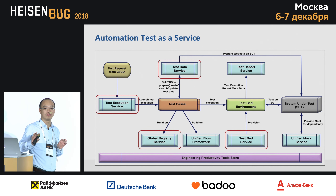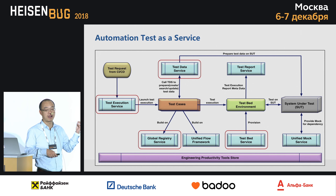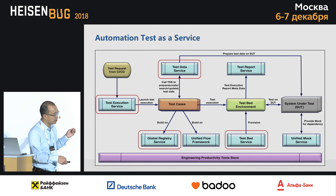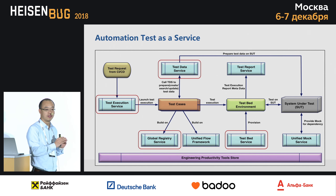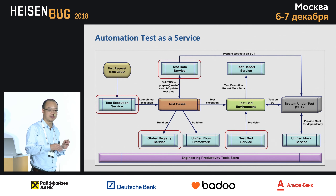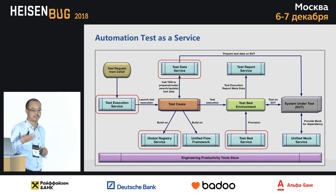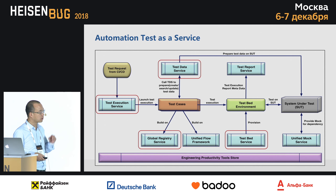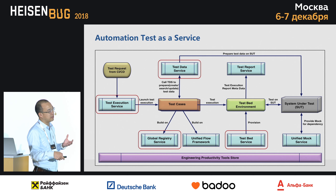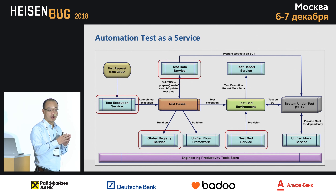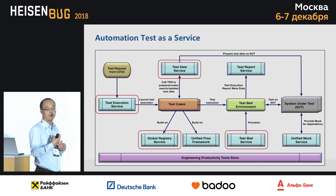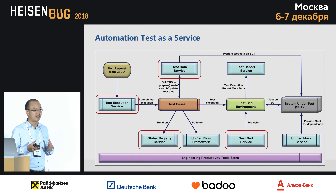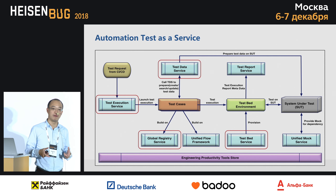The global registry service separates configuration from test cases - every configuration is a config file, and the test case code remains very stable. For test execution environment, eBay's test bed has a lot of diversity: different OSes, browser types, browser versions, and mobile devices such as phones running Chrome or Safari. This diversity is very hard for developers to manage themselves. So we have a test bed service that automatically prepares the entire test execution environment - users don't even need to know where the test environment is.